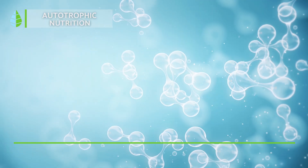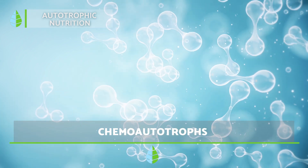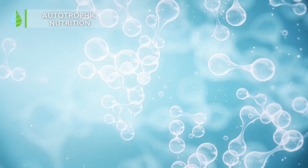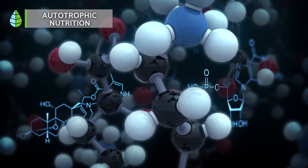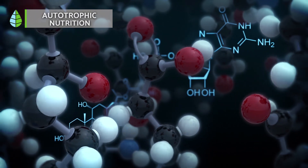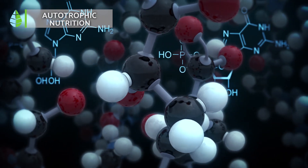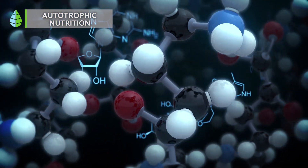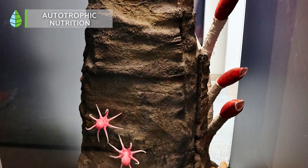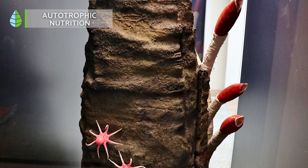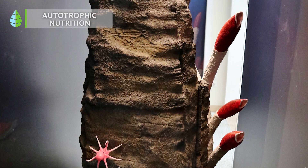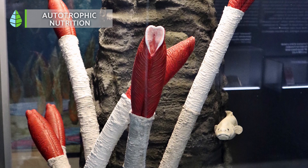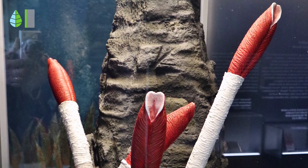Chemoautotrophs are organisms that utilize reduced inorganic substances, meaning they acquire electrons that they use for respiration. This type of feeding is an adaptation observed in autotrophic organisms that inhabit environments with low light availability. For example, the giant toothworm found in the deep sea.